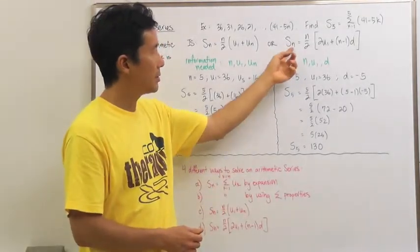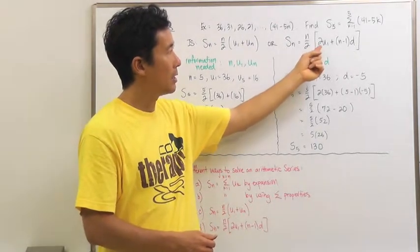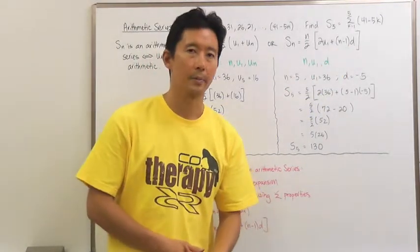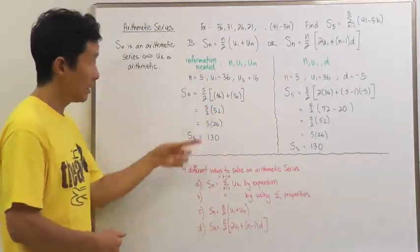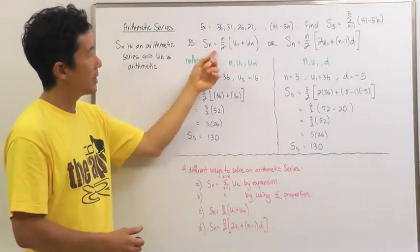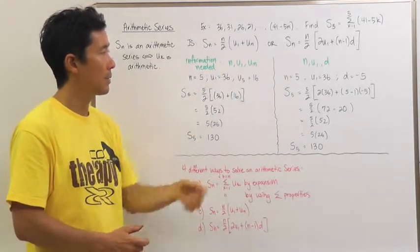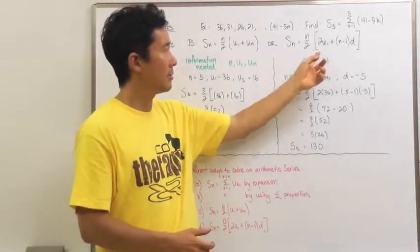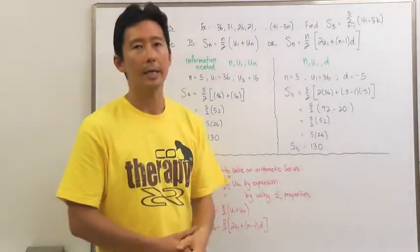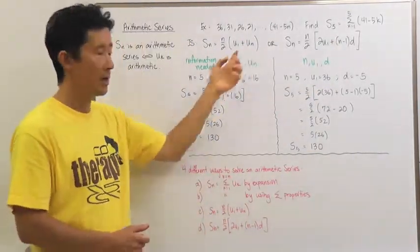Or it's going to be S sub N is equal to N over 2 times the quantity 2 times U sub 1 plus N minus 1 times D. For the first formula, we need to know N, U sub 1, and U sub N. For the second formula, we only need to know N, U sub 1, and D — so we don't need to know that last term, whereas with the first formula we do.